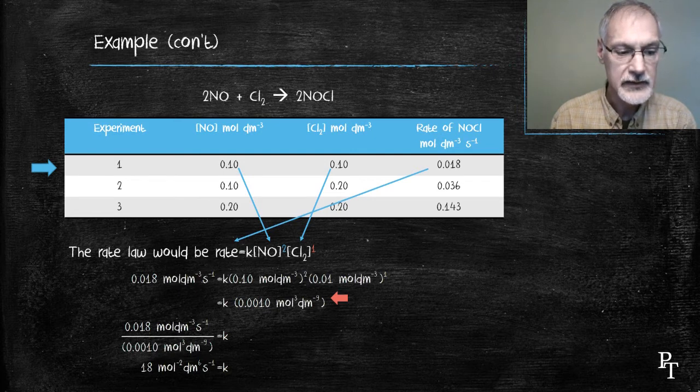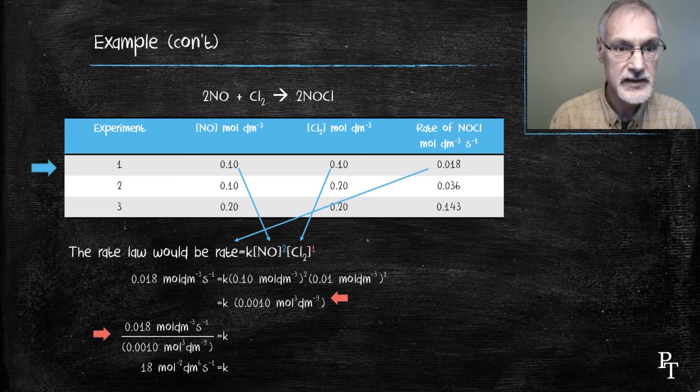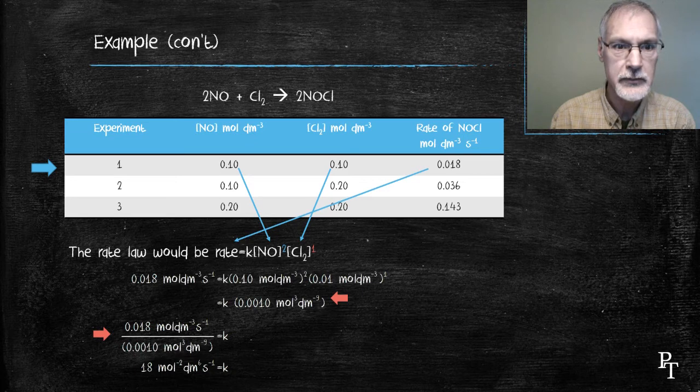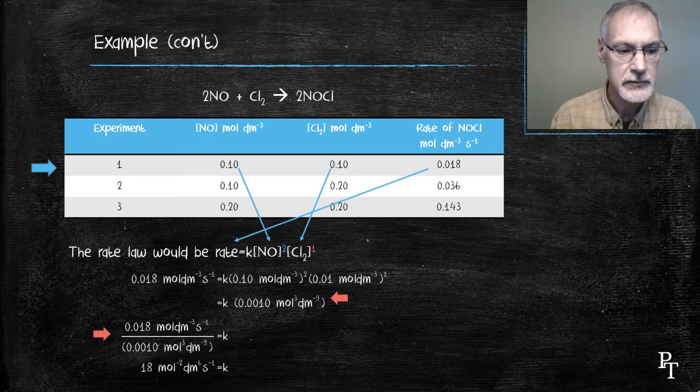In the next line, when I then solve for the value of the constant and its units, I therefore subtract the exponents. For instance, in this line, you'll notice mole on the top of the fraction and mole to the 3 on the bottom. By subtracting the exponent, 1 minus 3, I arrive at the final exponent, mole to the minus 2.